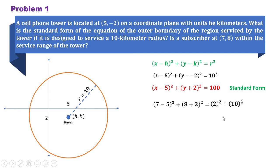This would now be 2 squared plus 10 squared. Simplifying, we can have 104. Since 104 is greater than 100, we can say that the subscriber at (7, 8) is outside the service range of the cell phone tower.